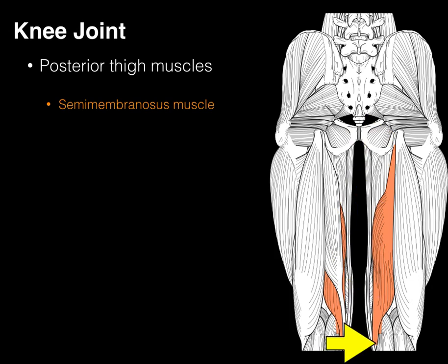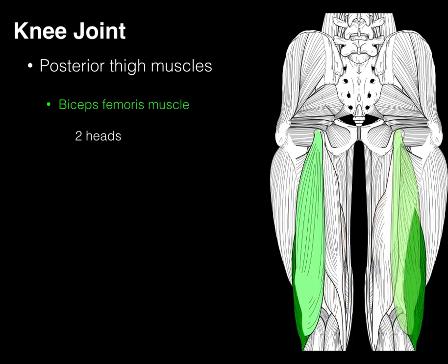They're called semitendinosus and semimembranosus because semi means partial — like a semi-truck, partially truck, partially trailer; semi-sweet chocolate tastes semi-sweet. This is semi-membrane, semi-muscle. You'll see this in the cadaver lab.